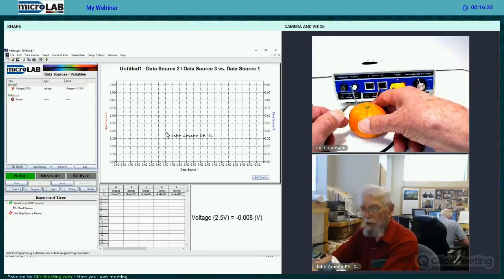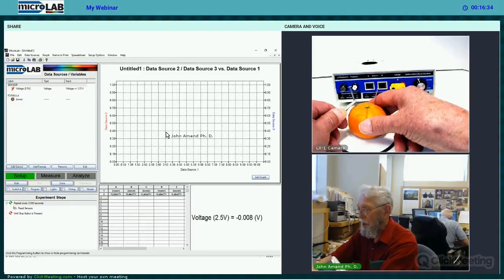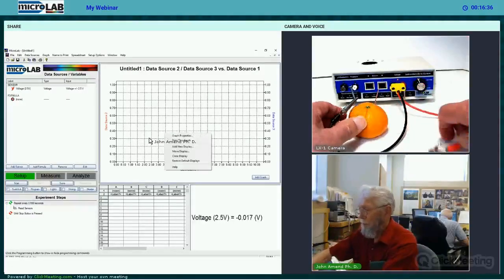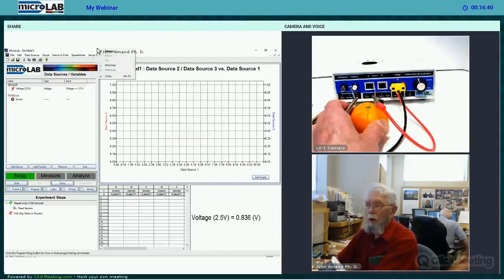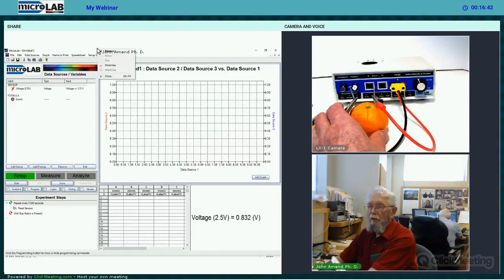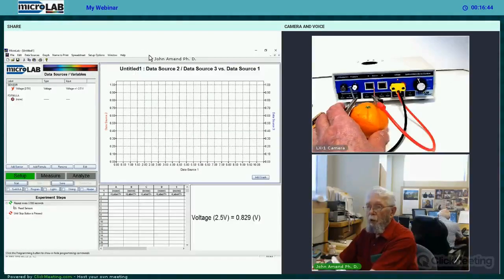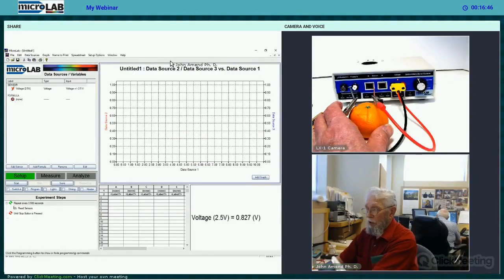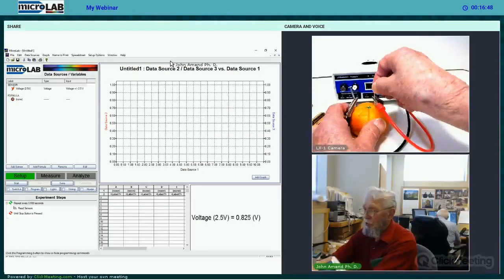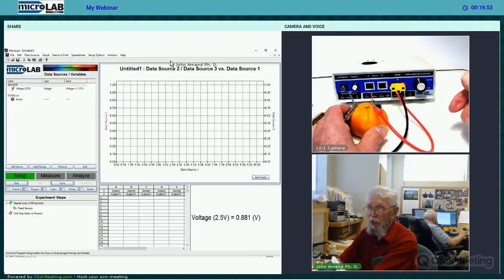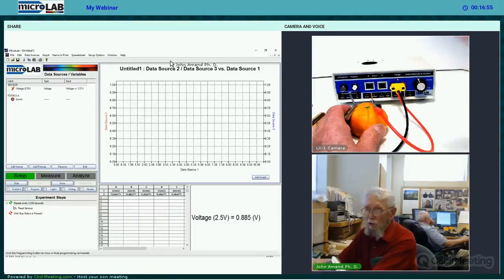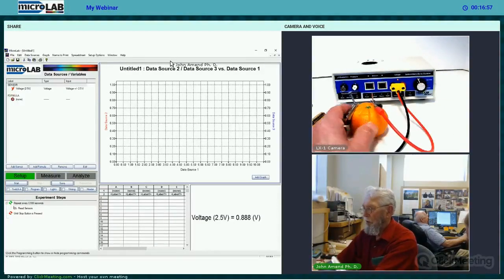But will also produce a voltage. What do you think? More? Less voltage? Any voltage at all? Let's take a look. And there we have a voltage. 0.828 volts at this moment. Does it change if we move the electrodes a little bit? Maybe. Maybe not. Doesn't seem to change very much. Same order that we saw with the other one.